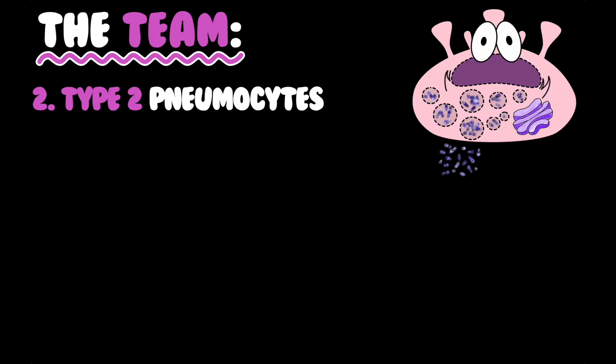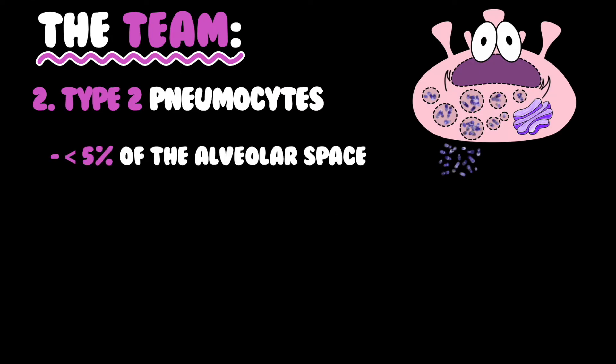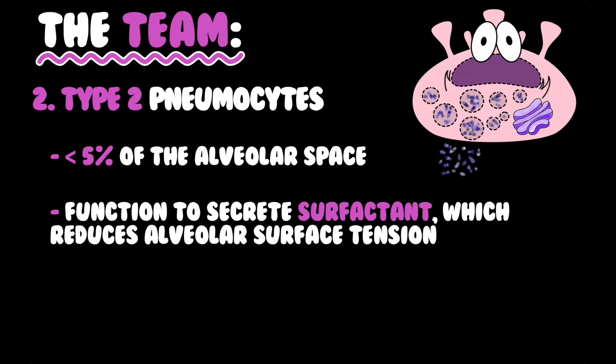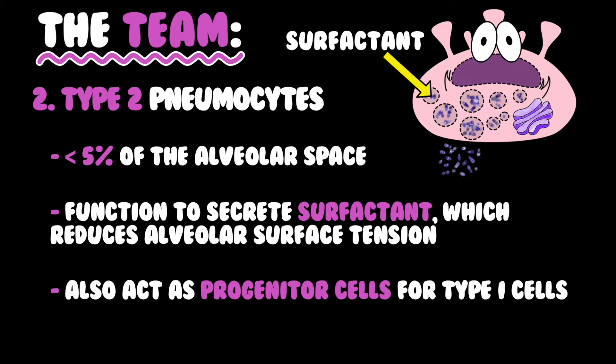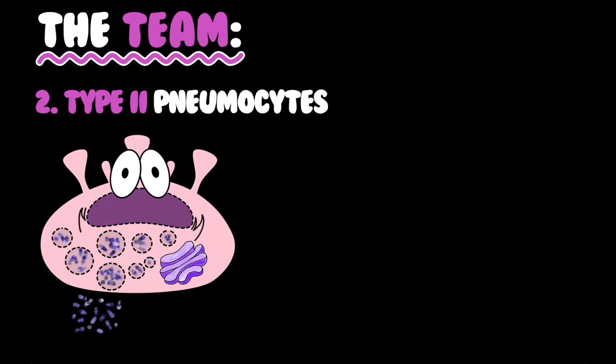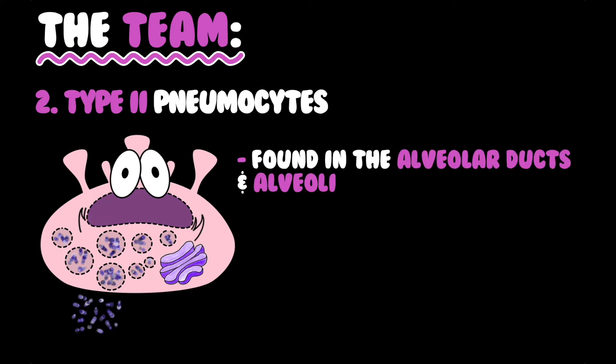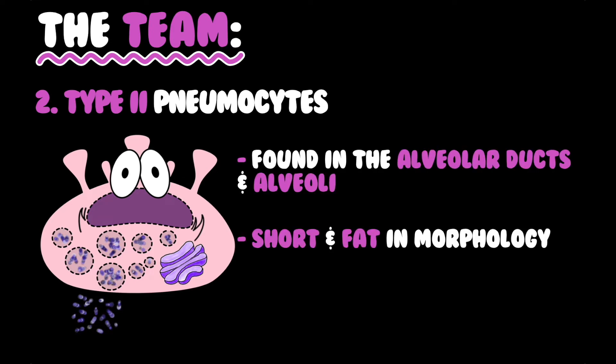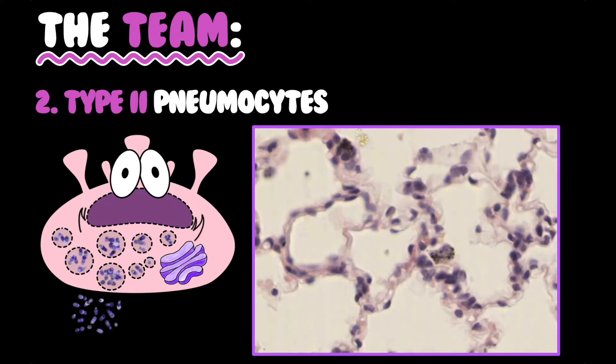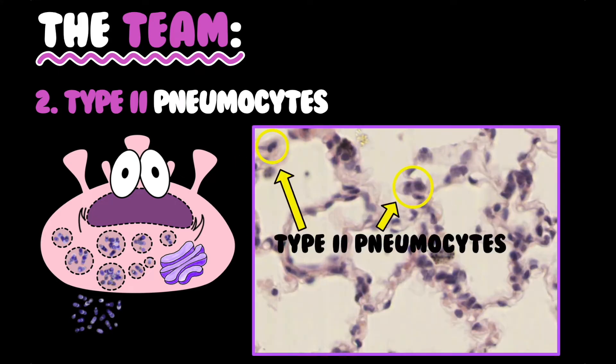Type 2 pneumocytes make up less than 5% of the alveolar surface. They function to secrete surfactant, which reduces alveolar surface tension. They also act as progenitor cells for type 1 cells. Type 2 pneumocytes are found in the alveolar ducts and alveoli and are short and fat in morphology compared to type 1 pneumocytes. These are our type 2 pneumocytes.